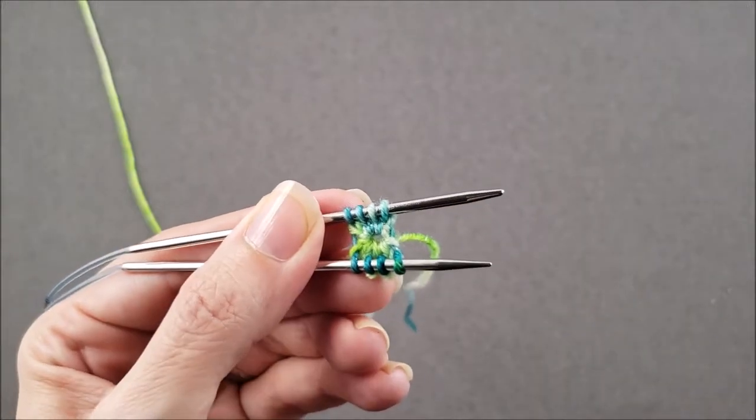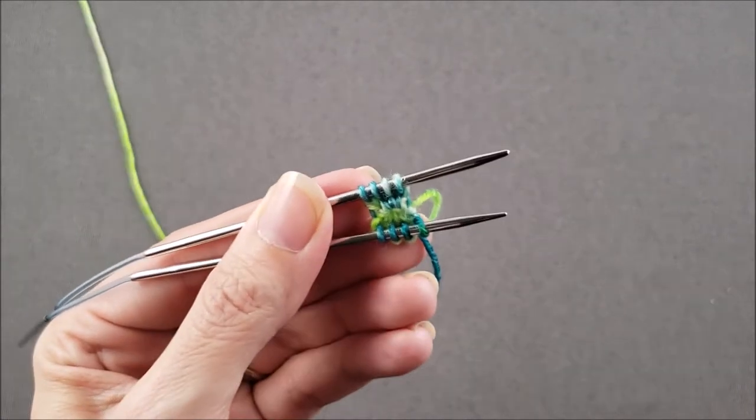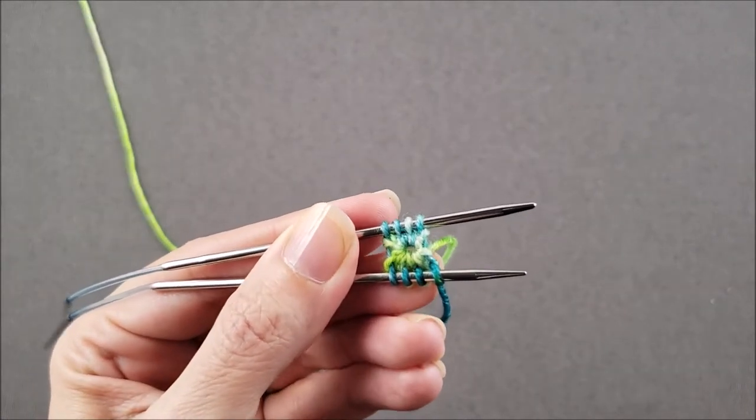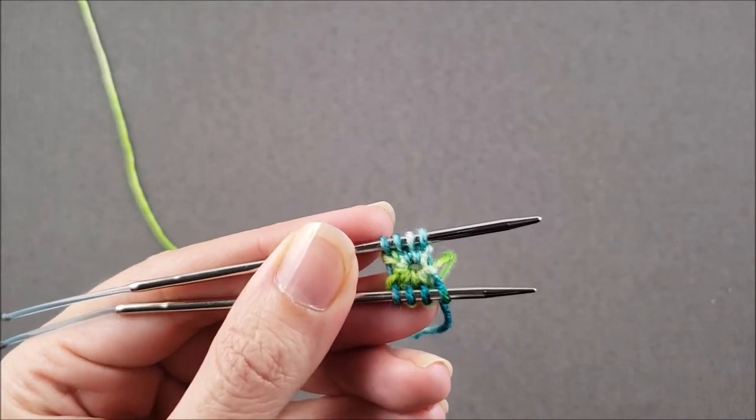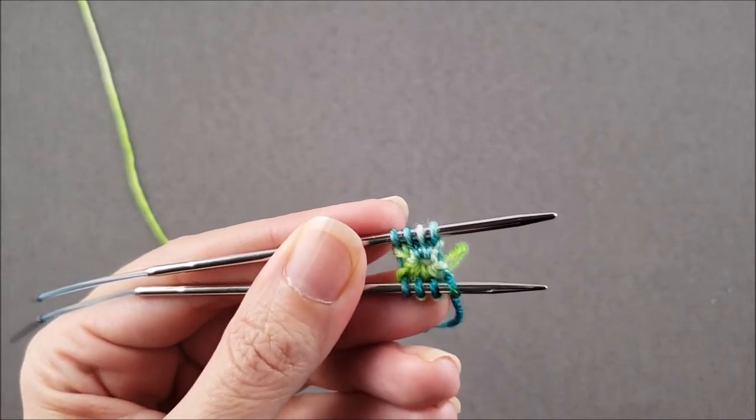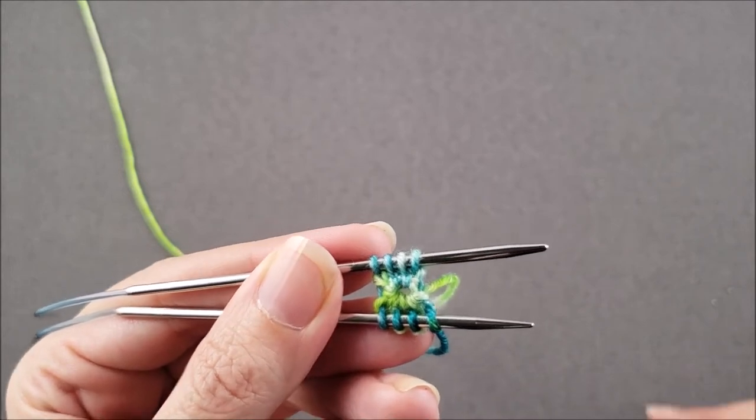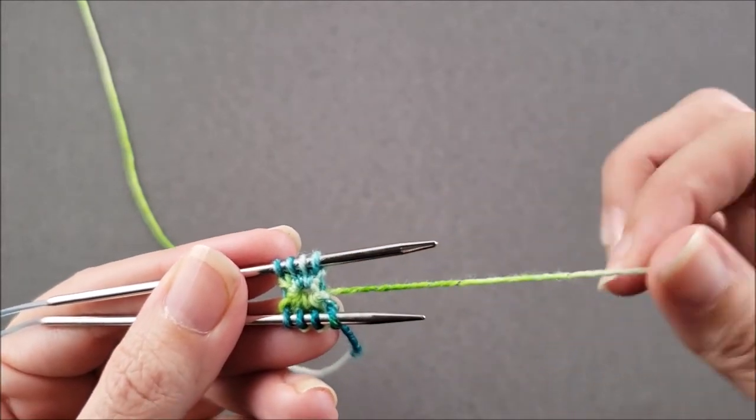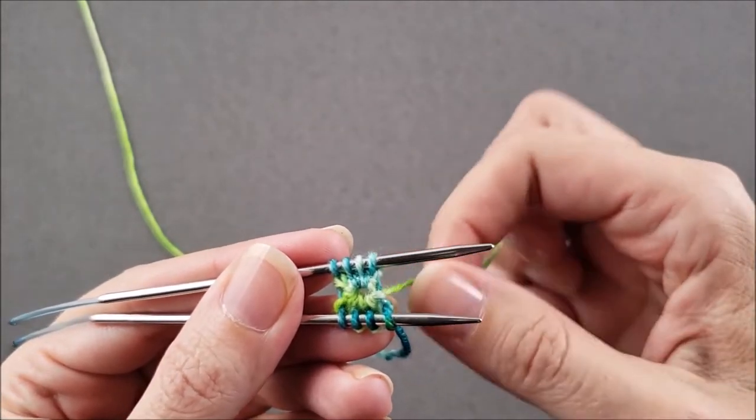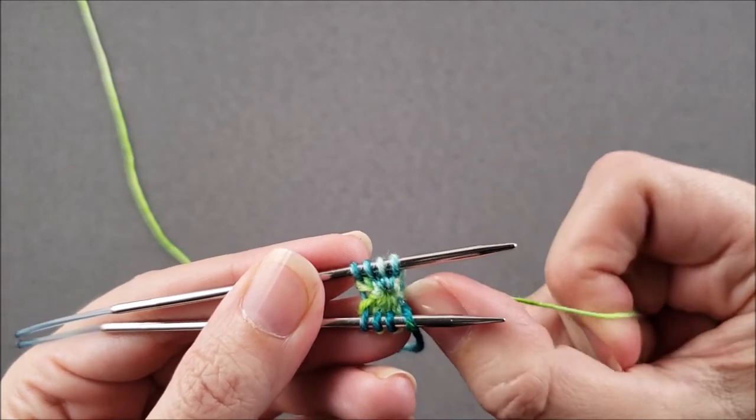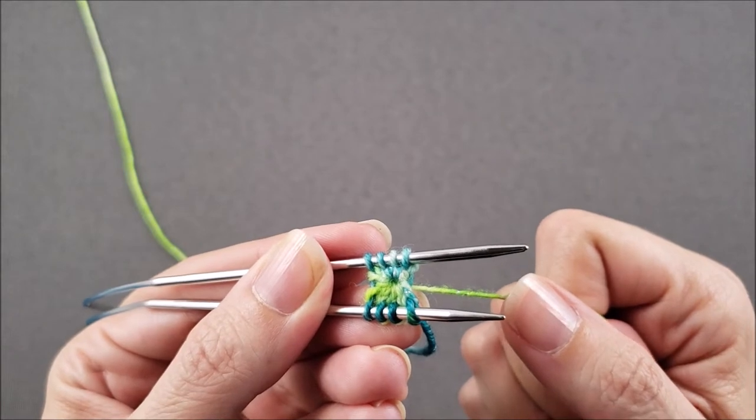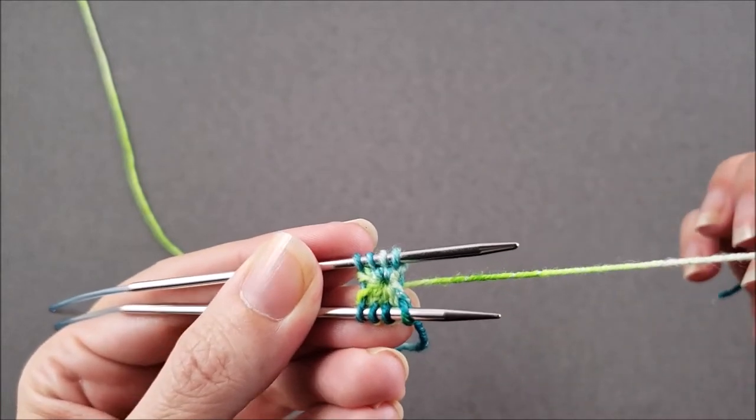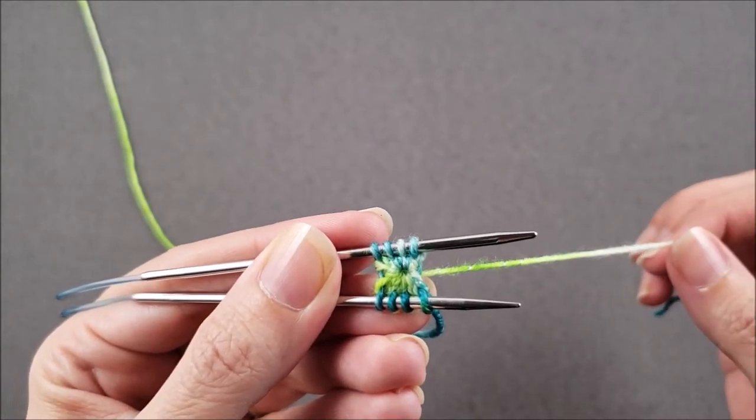As I was working the first round of my sock, you'll notice that this hole at the center opened up a little bit. Now I can see through it and of course you don't want that at the toe of your sock; you want it nice and tight and closed. So if this happens to you, all you have to do is take your yarn tail and just tug on it a little bit and you can see it closes up that little gap at the center and then you'll just weave in the yarn tail into your sock when you get a little bit further along.